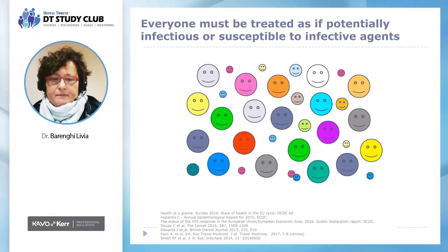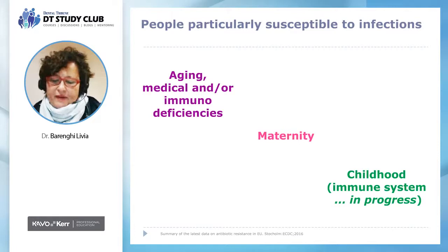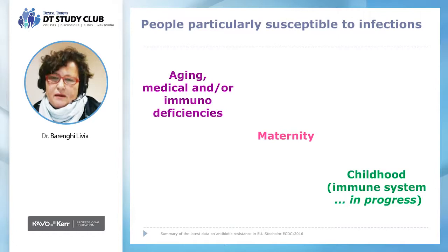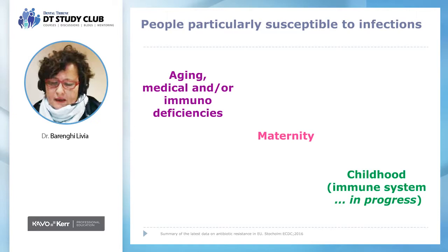Moreover, some people are particularly susceptible to infection from opportunistic pathogens. Vulnerable patients include pregnant women, elderly people, those affected by diabetes or immunodeficiency associated with chronic diseases, people under drug treatments such as for osteoporosis, or children due to their undeveloped immune systems. In the future, elderly patients will increase in number, prone to infections by opportunistic pathogens, and this situation favors antibiotic-resistant pathogens.